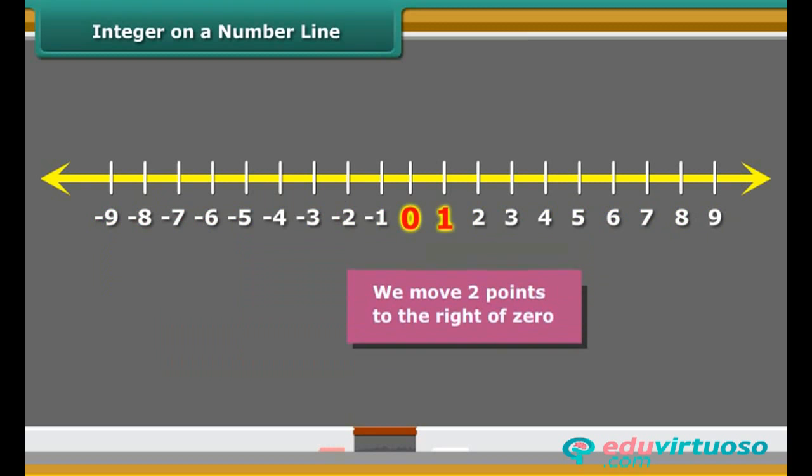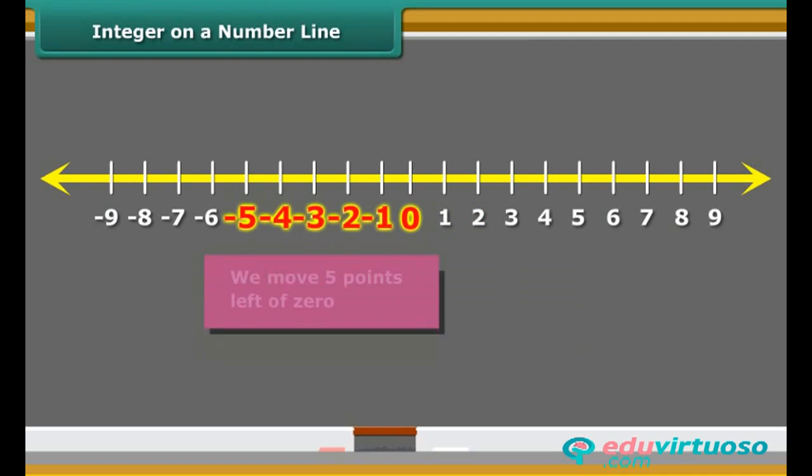Here to mark plus 2 on the number line, we move 2 points to the right of zero. Similarly, to represent minus 5, we move 5 points left of zero.